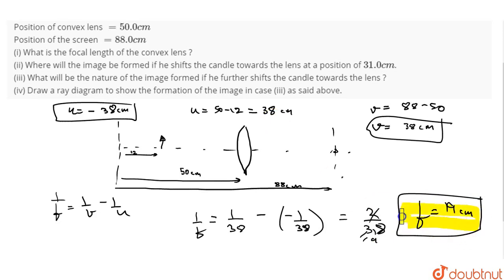Now u prime will be 50 minus 31, which is 19. U prime will be minus 19 cm.